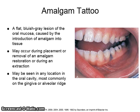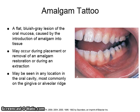An amalgam tattoo is seen intraorally as a flat, bluish-gray lesion of the oral mucosa caused by the introduction of amalgam particles into the tissue. It may occur during placement or removal of an amalgam restoration or during an extraction. It may be seen in any location in the oral cavity, most commonly on the gingiva or alveolar ridge.